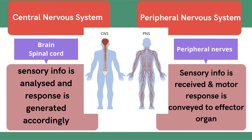Now let's talk about the peripheral nervous system. As you can see in the diagram, the peripheral nervous system consists of peripheral nerves. These nerves are responsible for receiving sensory information from the peripheral regions of the body and then taking that sensory information to the central nervous system — that is, the brain or spinal cord — which then analyzes that information and generates a response, which is again conveyed through these peripheral nerves to the effector organ.